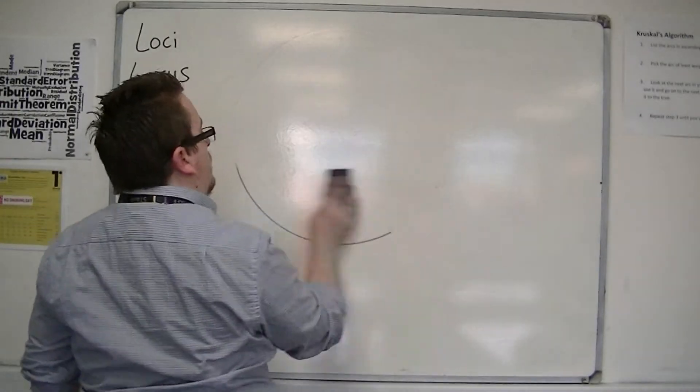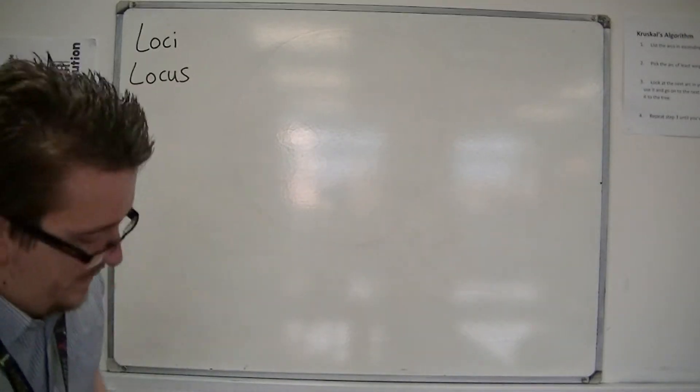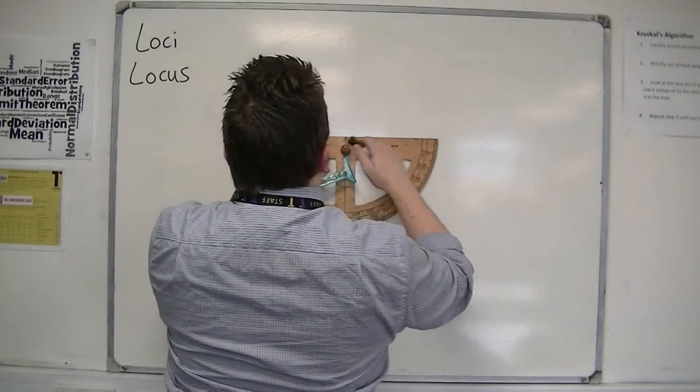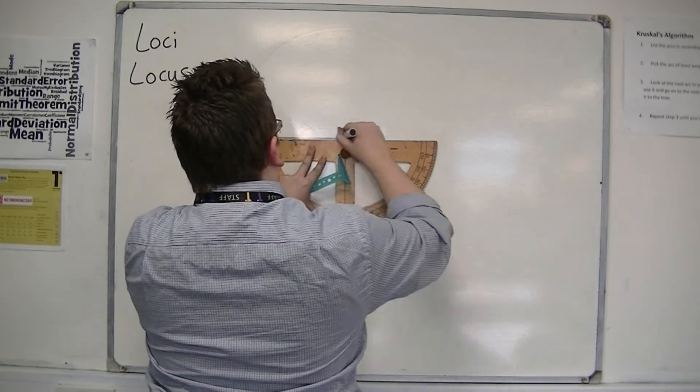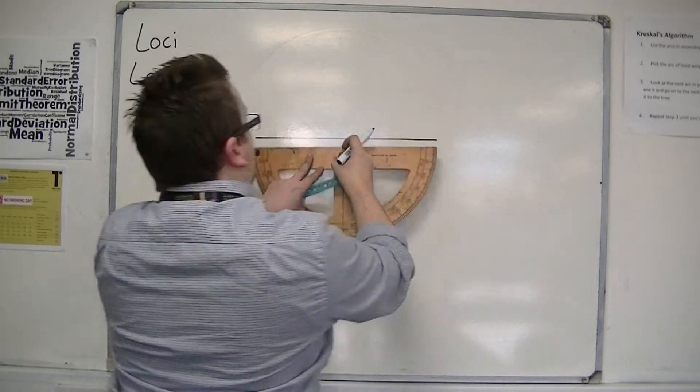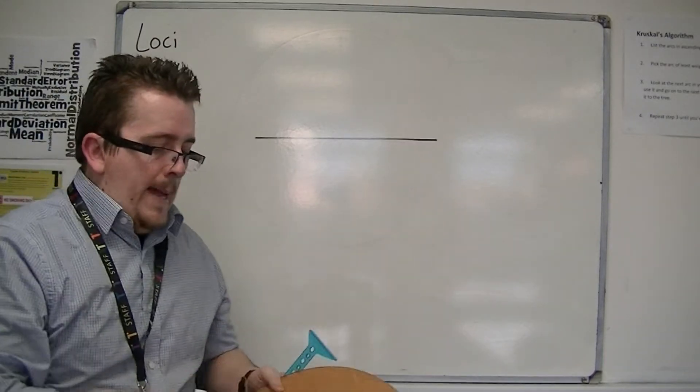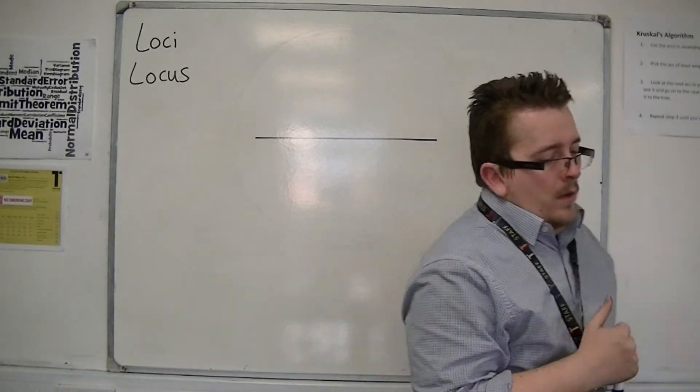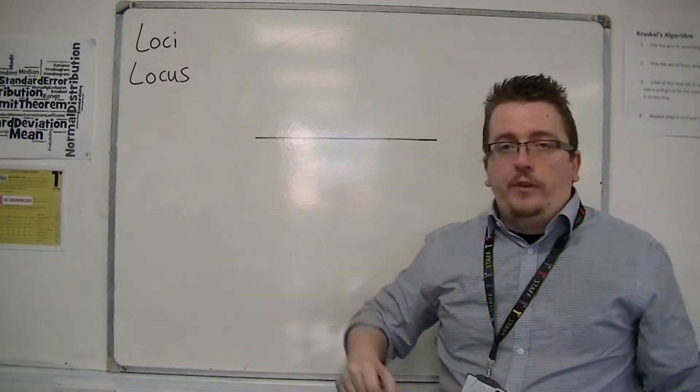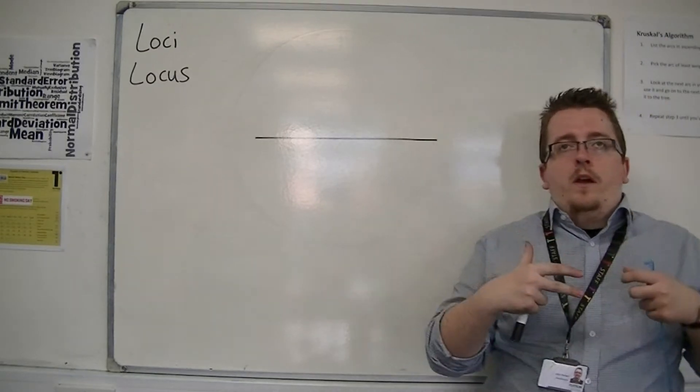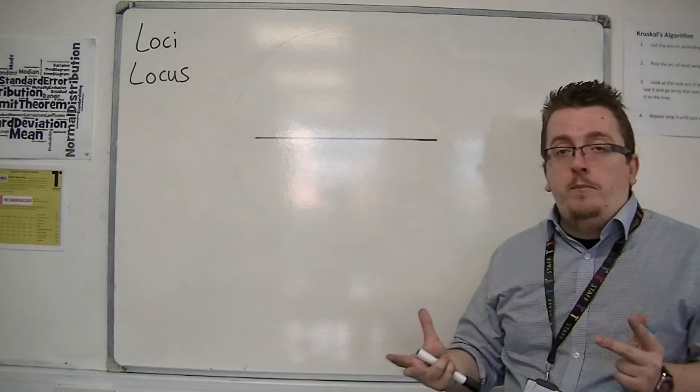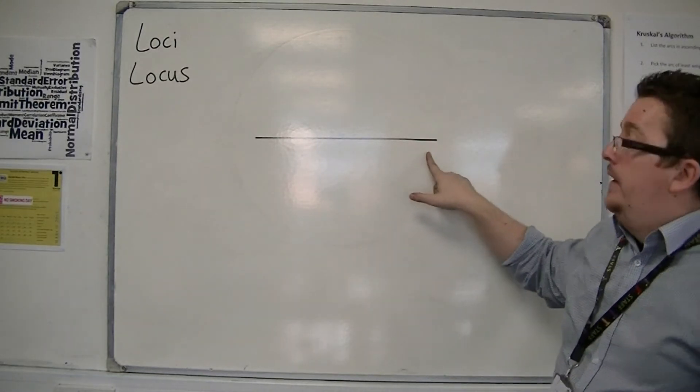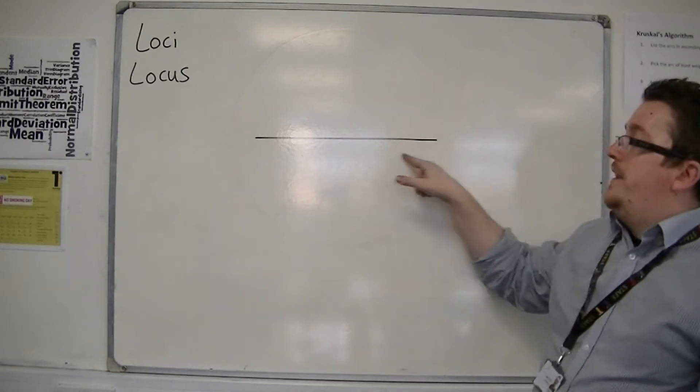Let's say now that we instead had the locus of a line. So let's say, with this analogy, let's say that this is a fence, and I have tied a sheep to the fence. And the actual tie on the fence can roam up and down the fence.